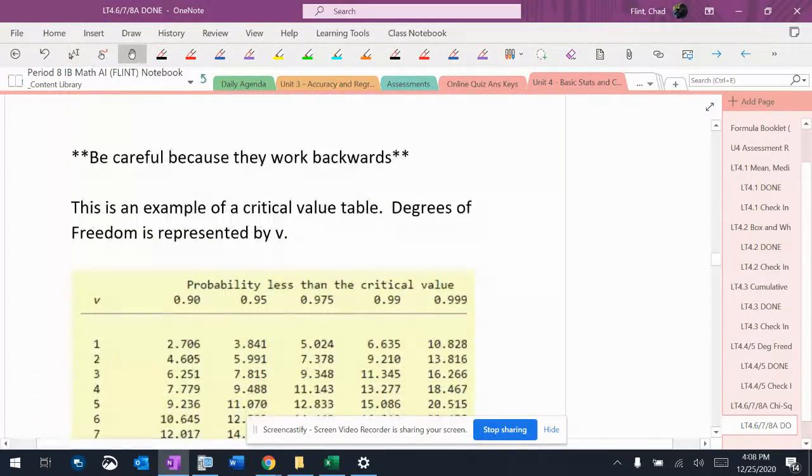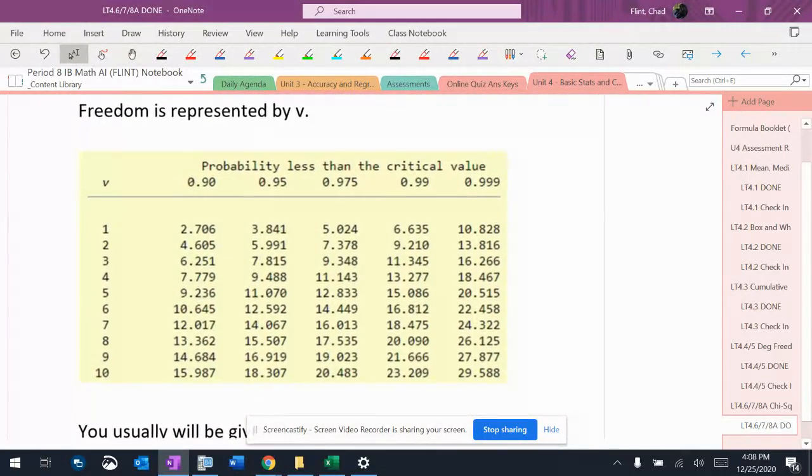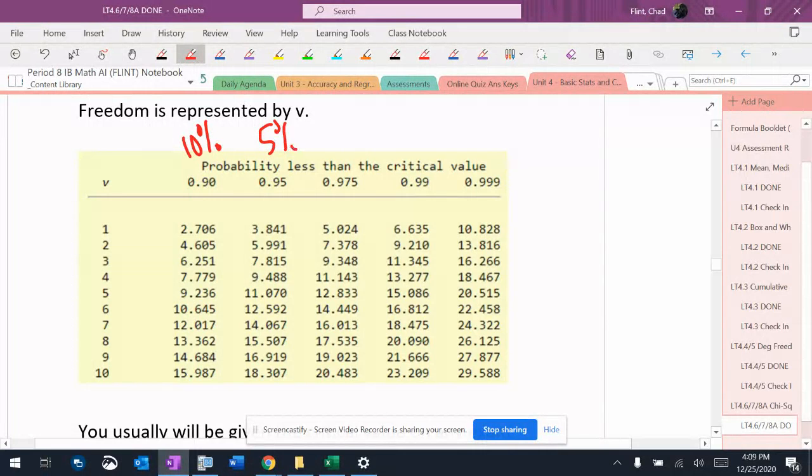The last thing I'm going to show you as you go down here, that's what a table might look like. This would be 10% significance level because it's 0.9. This would be 5%. This would be 1%. This is 0.01.